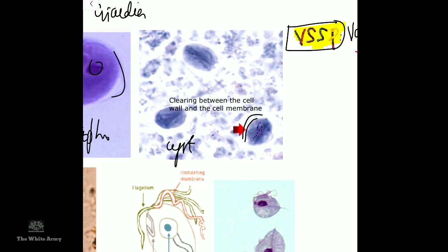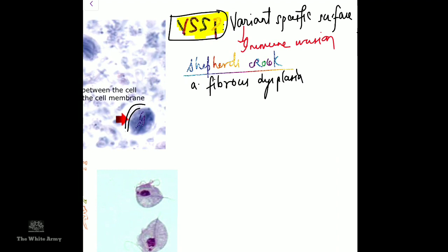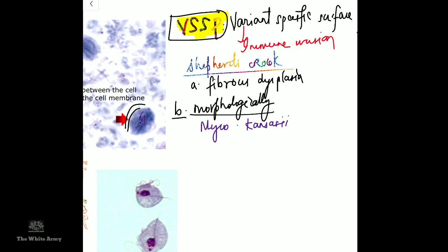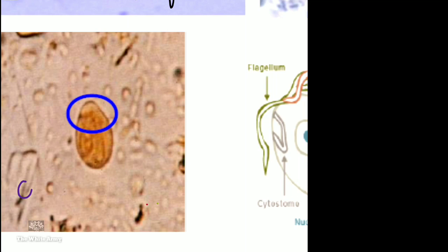The internal structure of Giardia is sometimes compared to a shepherd's crook appearance. Shepherd's crook deformity is also seen in fibrous dysplasia in orthopedics, and morphologically in Mycobacterium kansasii (an atypical mycobacterium). Giardia also shows falling leaf motility. This image shows the cyst of Chilomastix mesnili, a non-pathogenic flagellate with typical terminal clearance.